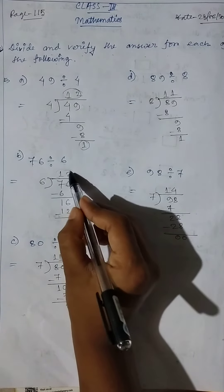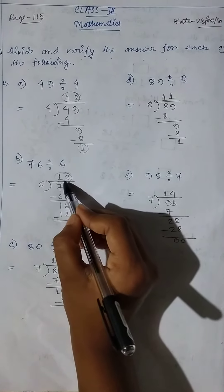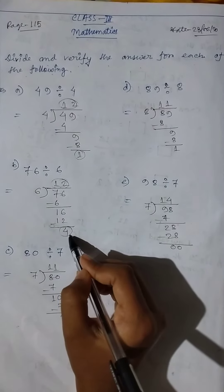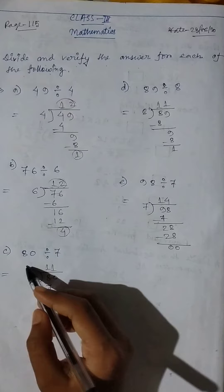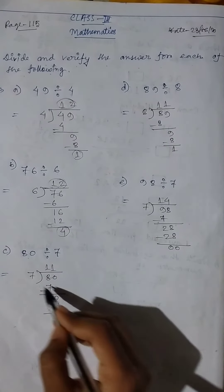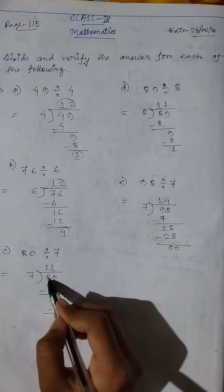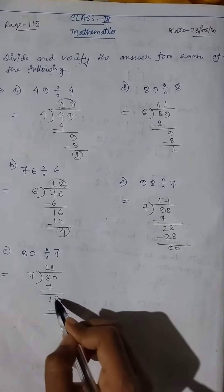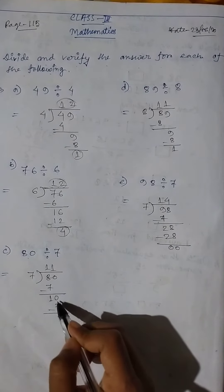7 ones are 7, 8 minus 7 equals 1. 0 here, 7 ones are 7, 10 minus 7 equals 3. Remainder 3, quotient 11. Then 89 divided by 8, quotient 11...